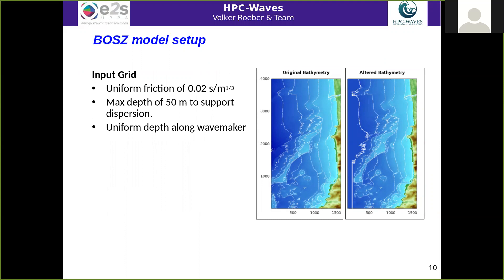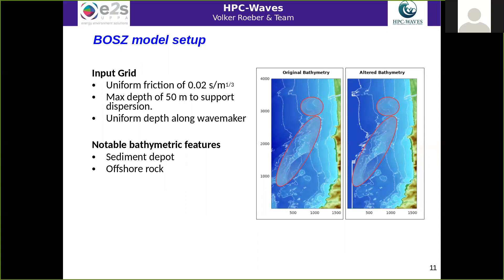There are two notable bathymetric features. One is a sediment deposit from dredging activity in the northern part of the domain, and the other is a long diagonally running rock formation between 20 and 30 meter depth.